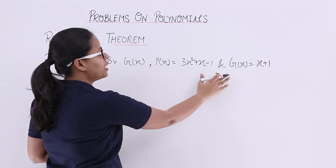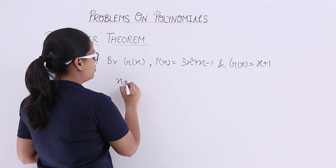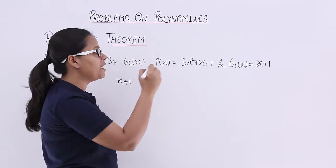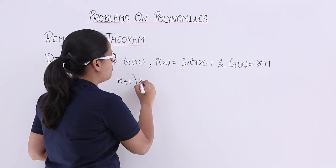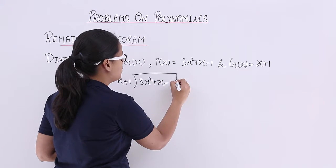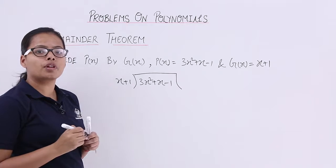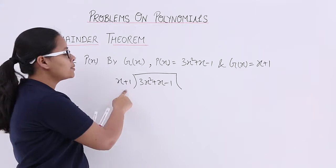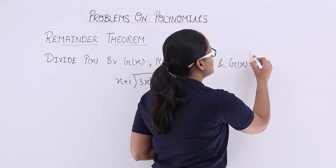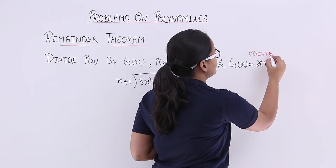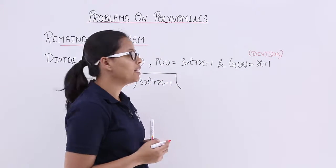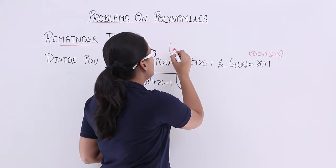You have to divide P(x) by g(x). So x+1 will be the divisor as it is dividing the dividend, which is 3x²+x-1. You need to remember x+1 is the divisor. This is the divisor and this is the dividend.